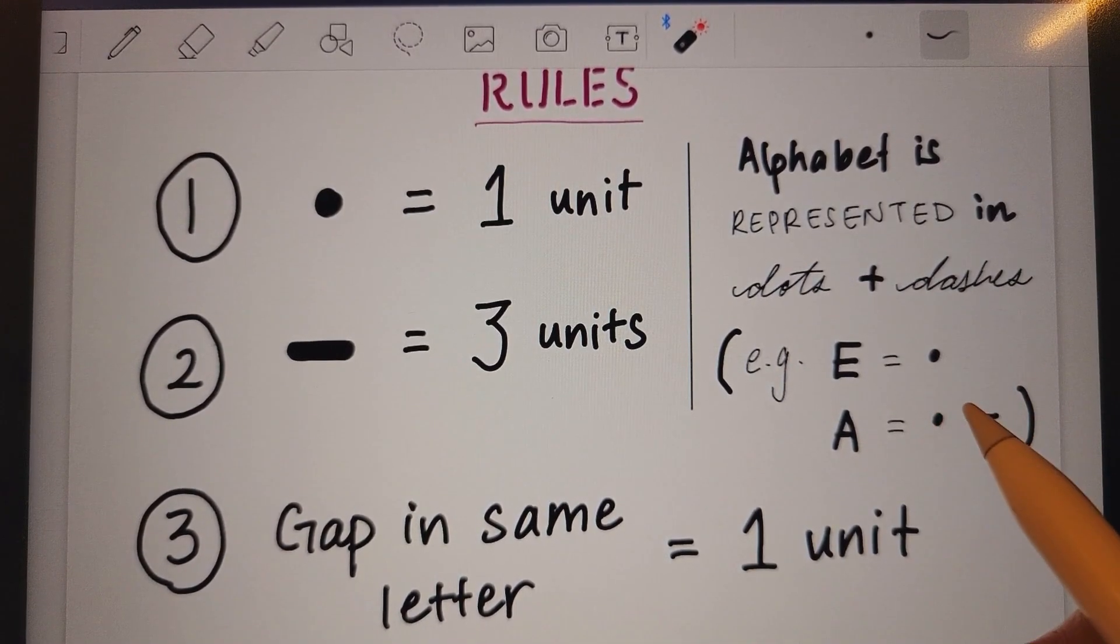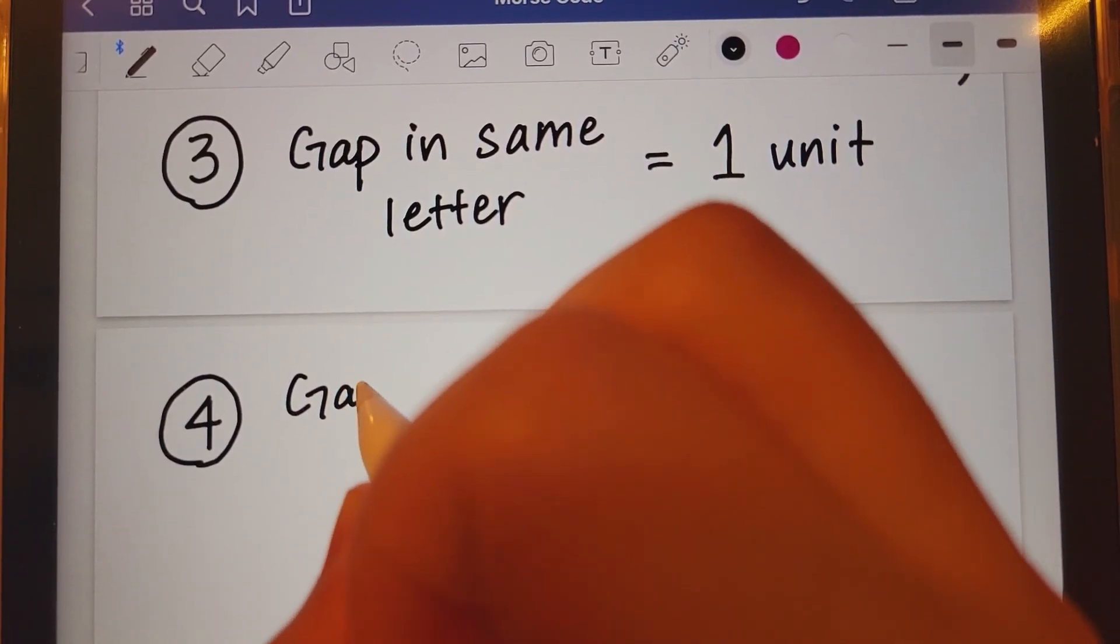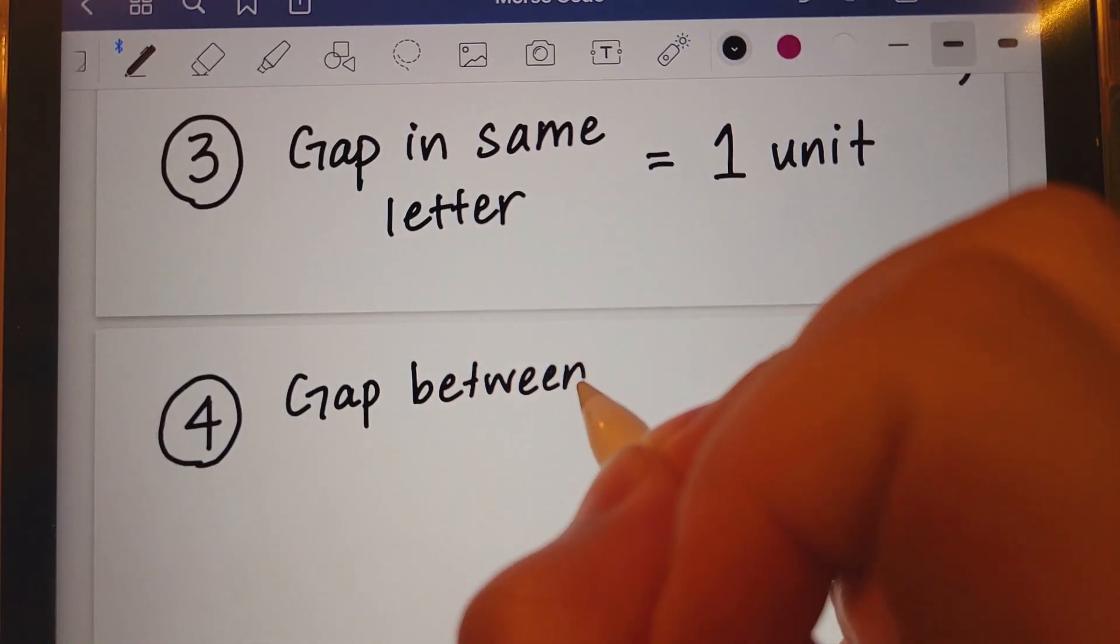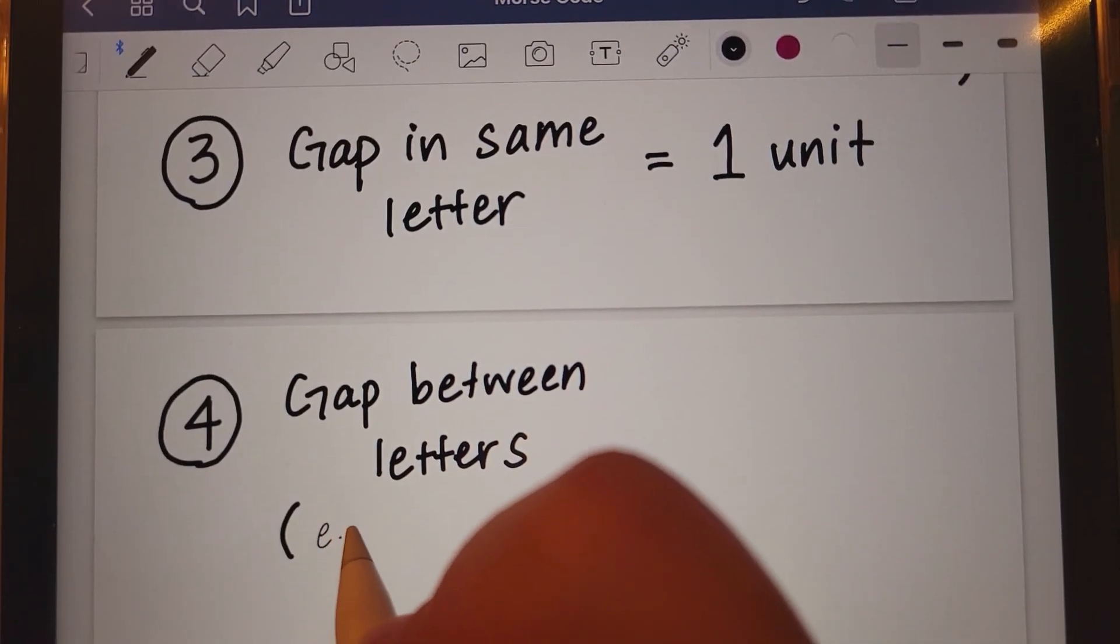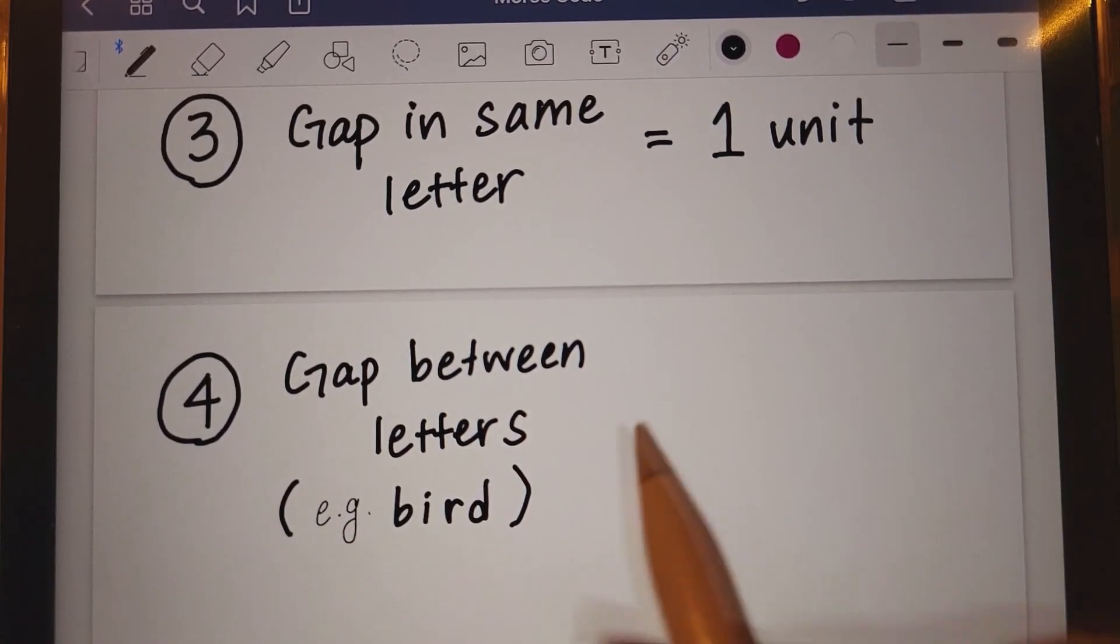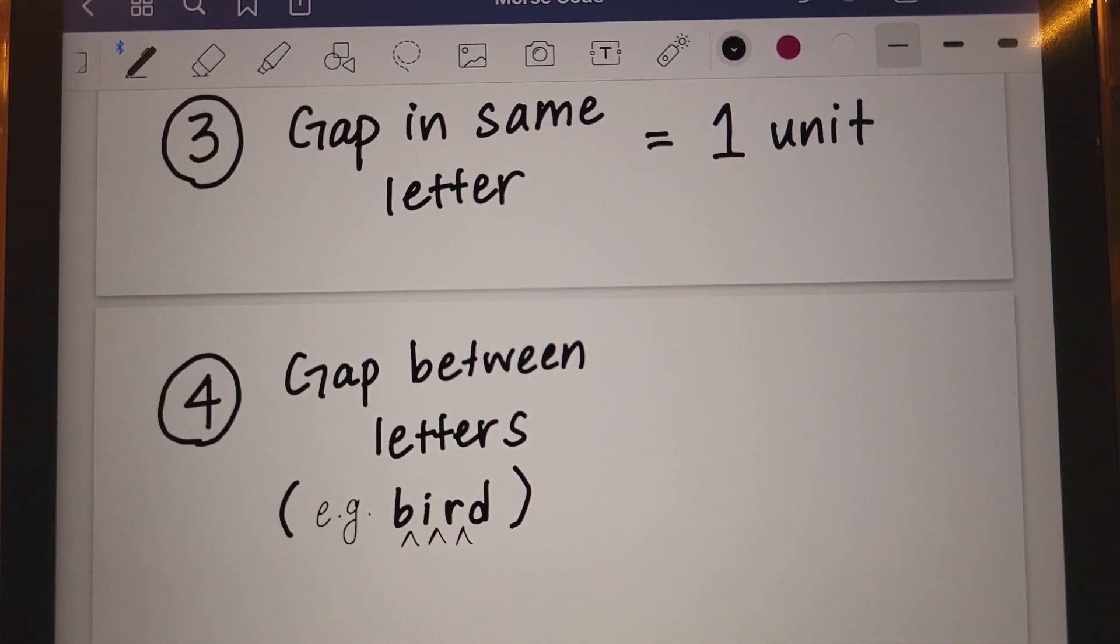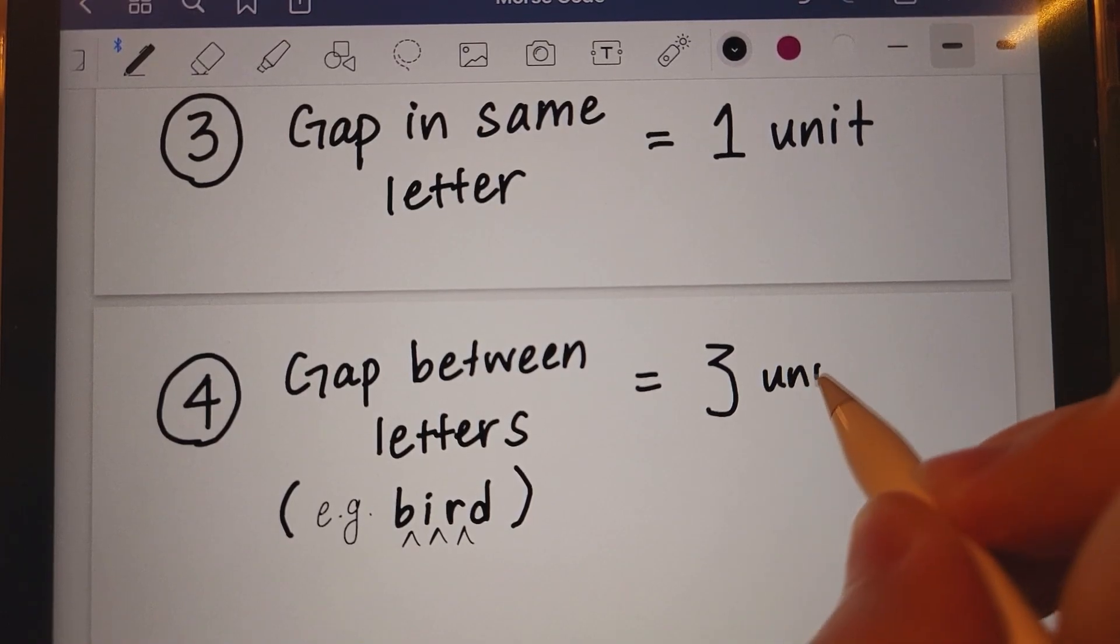So, dot, gap, dash. That would be one, one, three. Next, a gap between letters. Now, that's an example with bird. There are three gaps between each letter, and those are equivalent to three units.